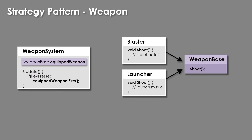We're going to look at two different examples. The first one is going to be using a weapon system, and I'm choosing this one because I want to show you how to use base classes as a strategy pattern. Then we'll also look at interfaces as well. So in our weapon system, we're going to have a weapon base that can shoot — all weapons will need to shoot. We'll have a blaster and a launcher, and each one will shoot, and we could change them individually if we want.